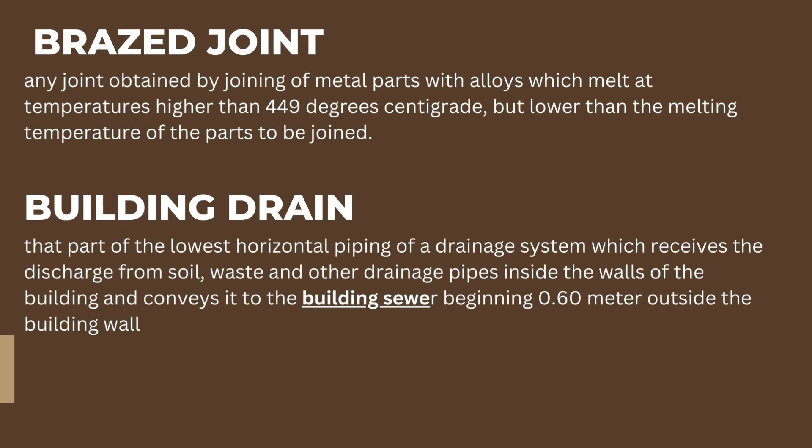Braze joint: any joint obtained by joining of metal parts with alloys which melt at temperatures higher than 449 degrees centigrade but lower than the melting temperature of the parts to be joined. Building drain: that part of the lowest horizontal piping of a drainage system which receives the discharge from soil, waste, and other drainage pipes inside the walls of the building and conveys it to the building sewer beginning 0.60 meter outside the building wall.